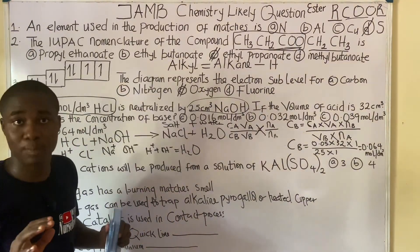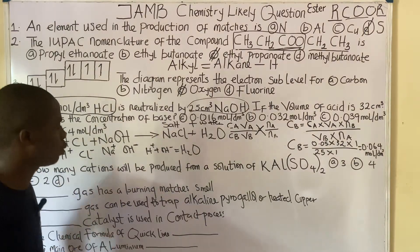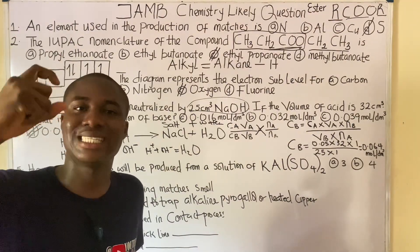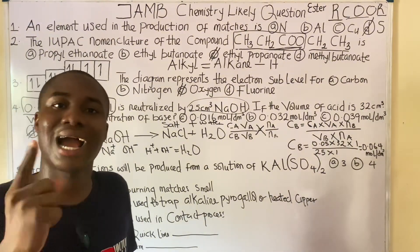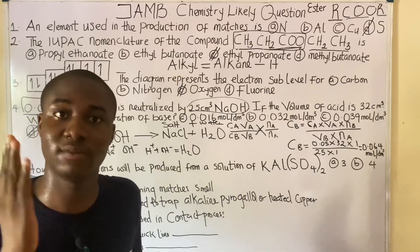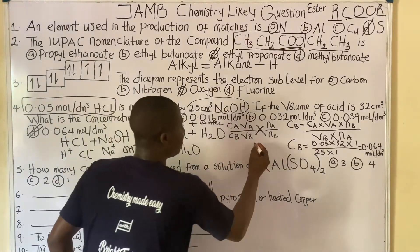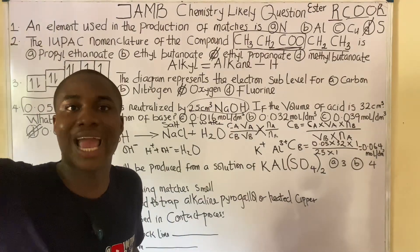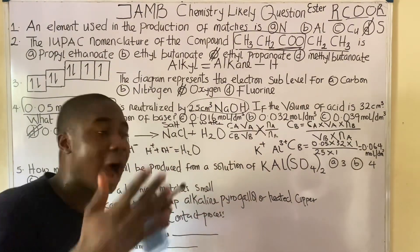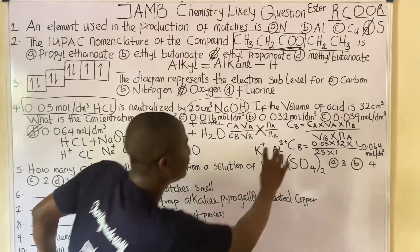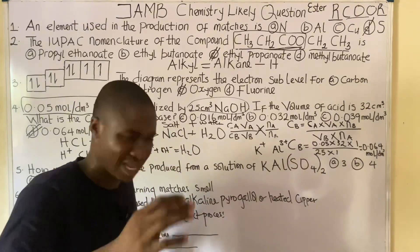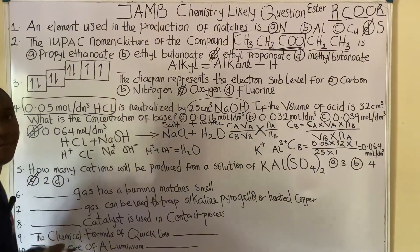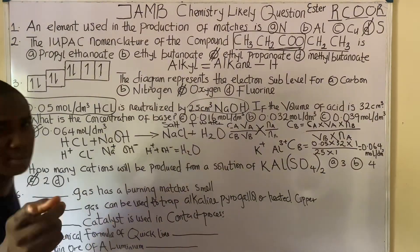The next practice question asks: how many cations will be produced from a solution of this compound? Cations are positively charged elements — most times metals. Looking at this compound, the metals present are potassium and aluminium. The other groups are radicals, which are typically negatively charged. So there are two cations, and the answer is option C.